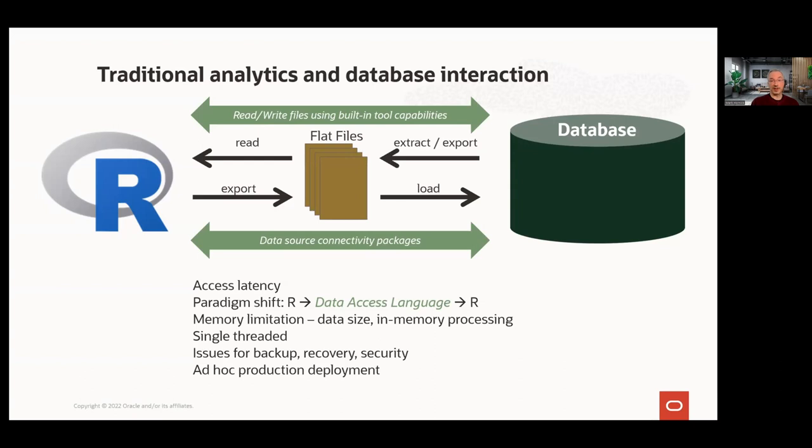The challenges include data access latency and requiring a paradigm shift — the need to change language to access and manipulate data. If you're an R user, you may not want to switch to SQL to specify the data of interest or needed transformations. Perhaps even more critical are memory limitations, with the need for the full data set to reside in memory for analysis. There's also the issue of single-threaded packages, where even if you have multiple processors available, the software can't take advantage of them. And when data is pulled from the database, there may also be issues of backup, recovery, and security. Finally, there's the need to get solutions to production deployment — spawning R engines, loading functions and data, and enabling applications and dashboards to access results.